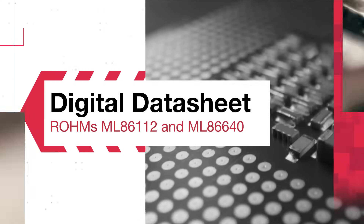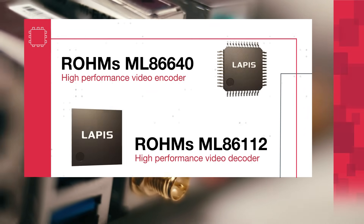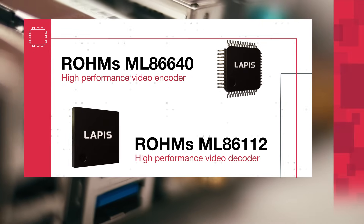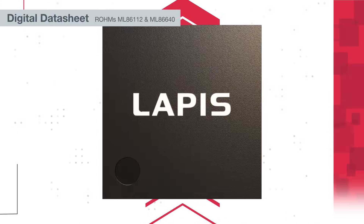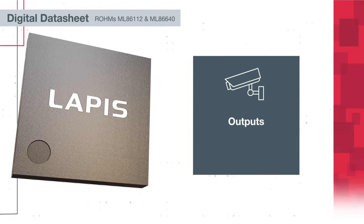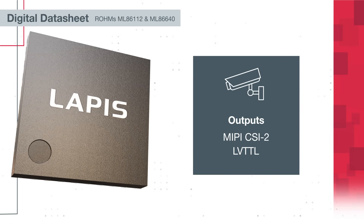Roam's ML86112 and ML86640 are high-performance video encoder and decoder ICs designed for intense automotive applications. The ML86112 is a MIPI CSI-2 LVTTL output video decoder that can be used as an interface conversion LSI.